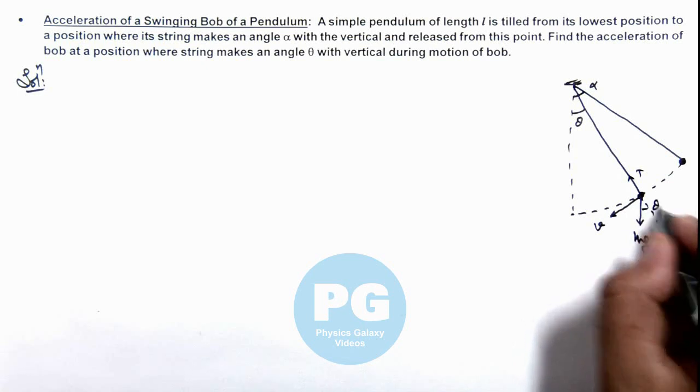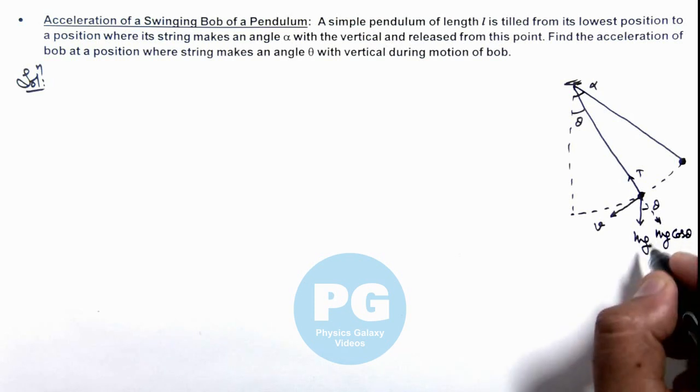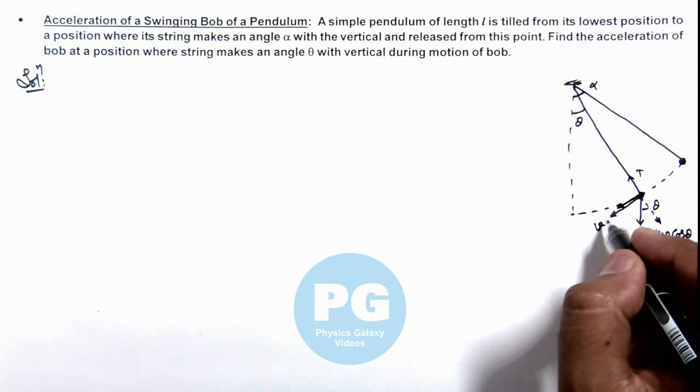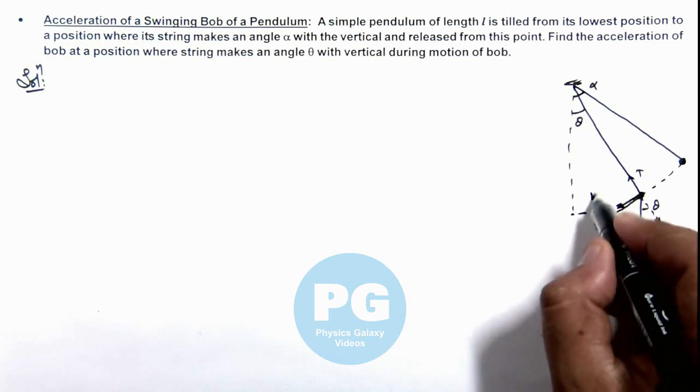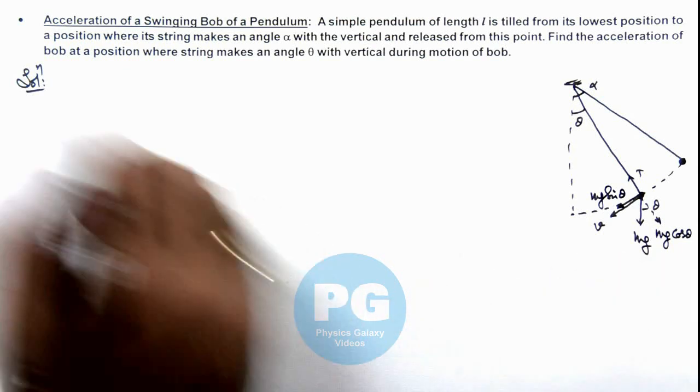And this angle is also theta, so the force outward in the radial direction would be mg cos theta. And the tangential force acting on the bob, which is responsible for its tangential acceleration at this position, is mg cos theta. Now in this situation, here we can write...